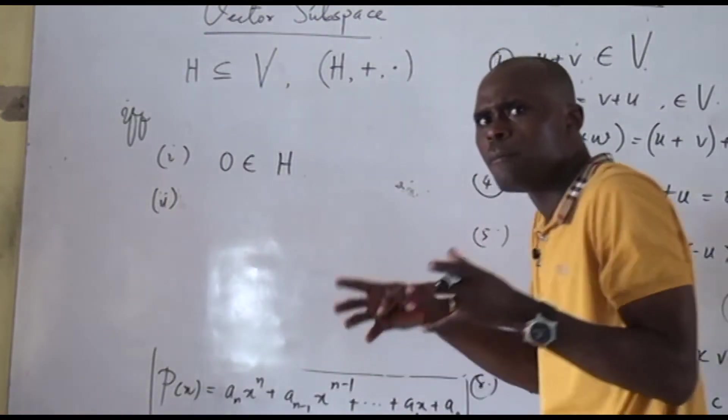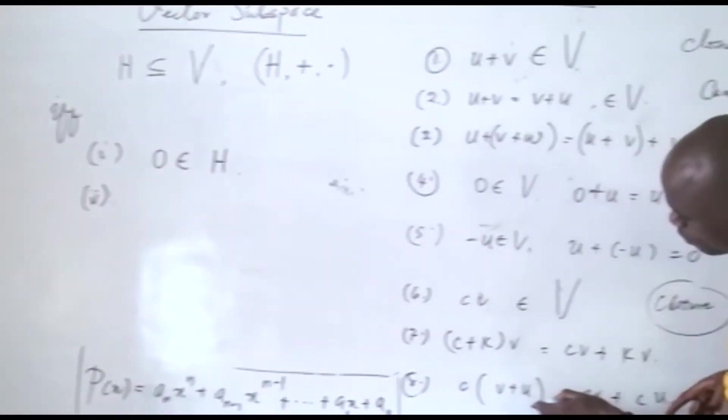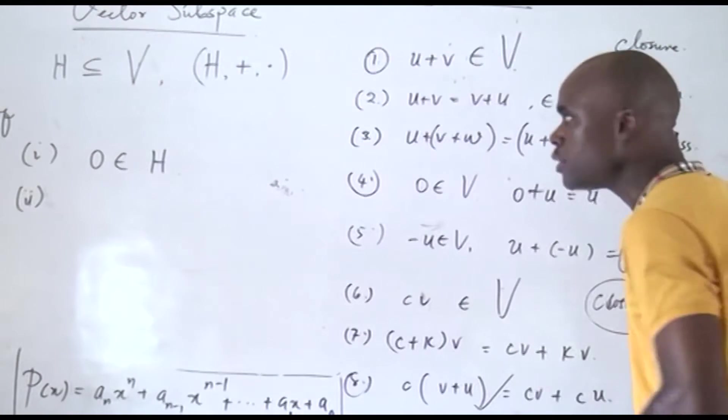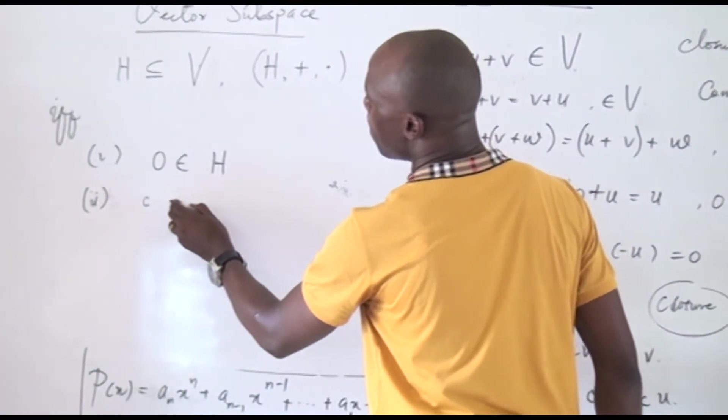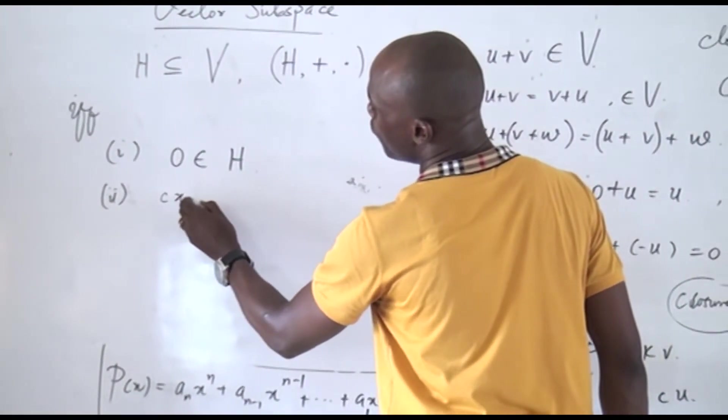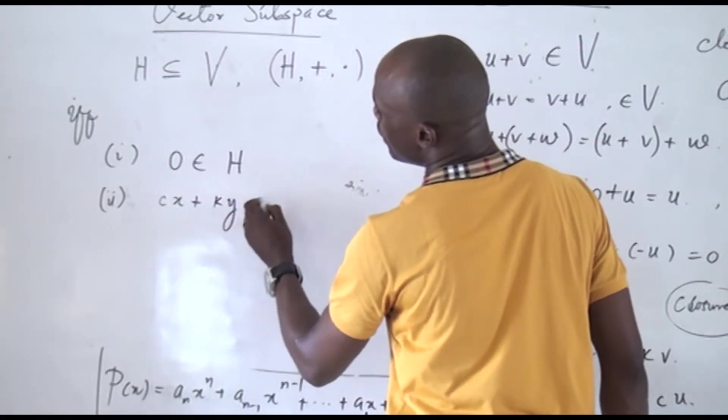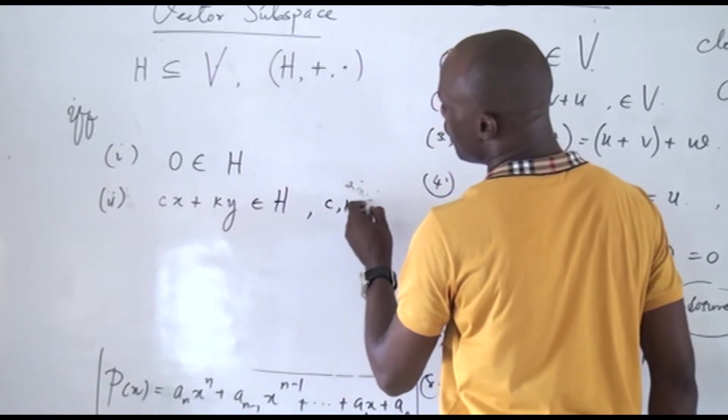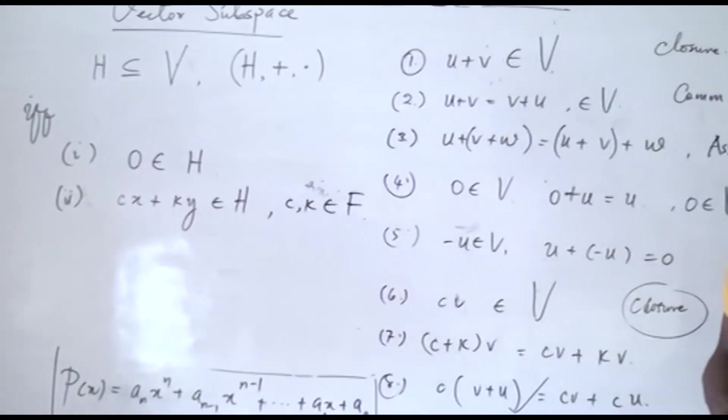Two, we can show closure. If we can show closure, but I'm going to combine that. So, if we can actually show that C times X which is a vector, let's say X is a vector, and K times Y is in H for C and K in the field. For C and K in the field.